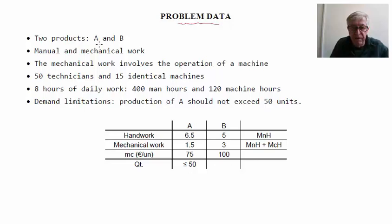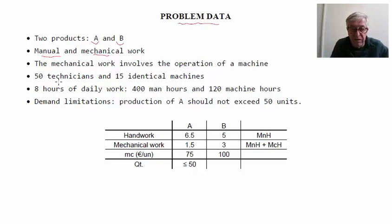Let's start with the problem data. We have two products, product A and product B. They are produced involving both manual and mechanical work. The mechanical work involves the operation of a machine — we need a technician and a machine simultaneously. We have 50 technicians and 15 identical machines, considering 8 hours a day, giving us 400 man-hours and 120 machine-hours available.